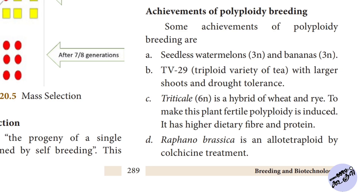One achievement of polyploid breeding is seedless fruits. The TV-29 AAA variety of tea, with larger leaves and drought tolerance, is an example.